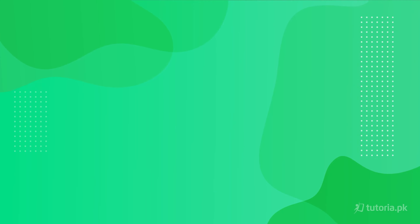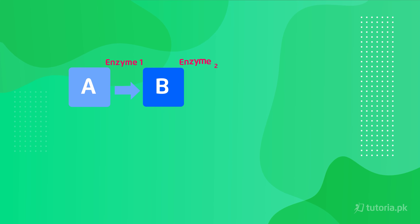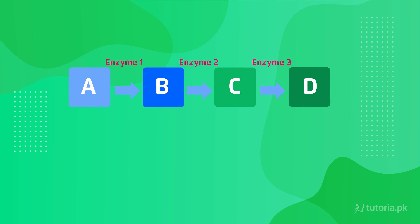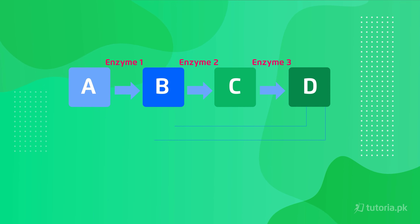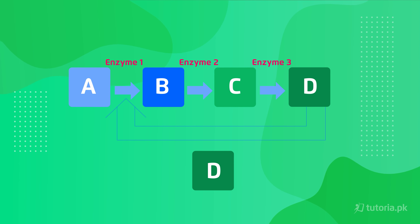Non-competitive inhibition can sometimes be reversible and sometimes irreversible. Then there is feedback inhibition — this is the inhibition in which the end product of the enzyme inhibits the enzyme itself. Inside your body, feedback inhibition is mostly what occurs. As you can see in the diagram, the product D goes back and stops the activity of enzyme 1.